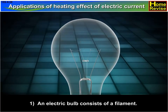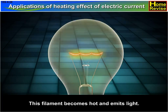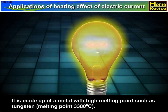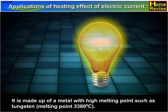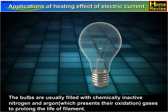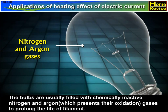1. An electric bulb consists of a filament. This filament becomes hot and emits light. It is made up of a metal with a high melting point, such as tungsten, whose melting point is 3380 degrees Celsius. The bulbs are usually filled with chemically inactive nitrogen and argon gases, which prevents oxidation to prolong the life of the filament.